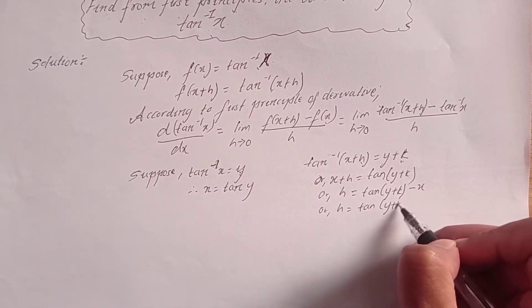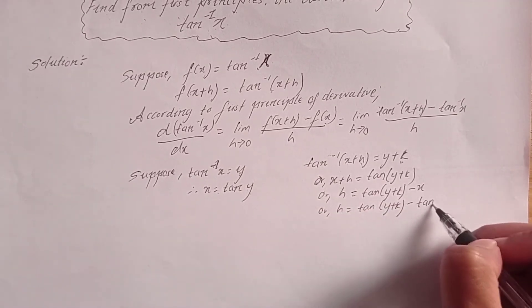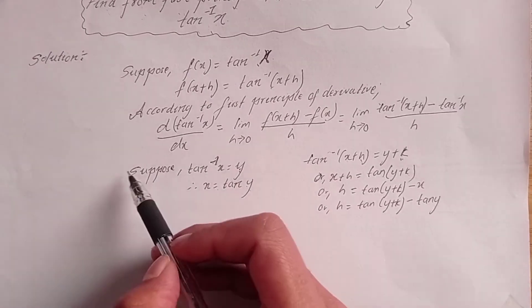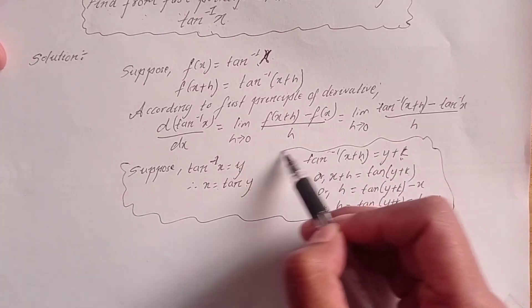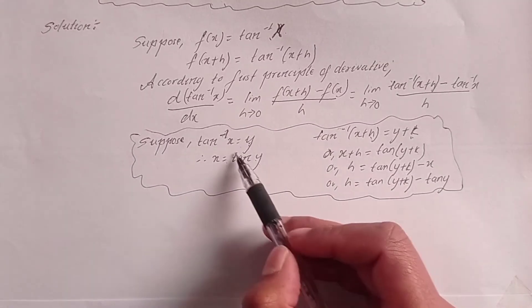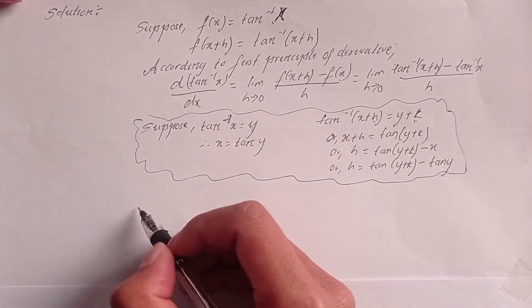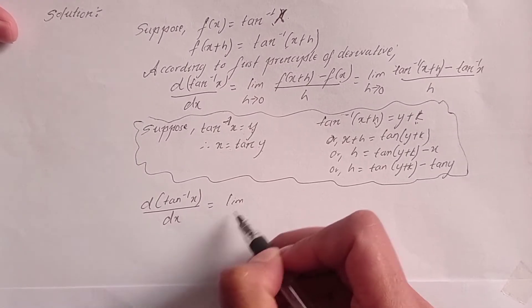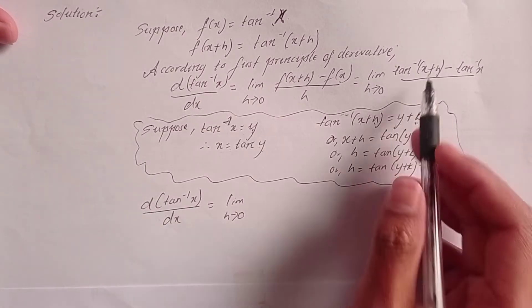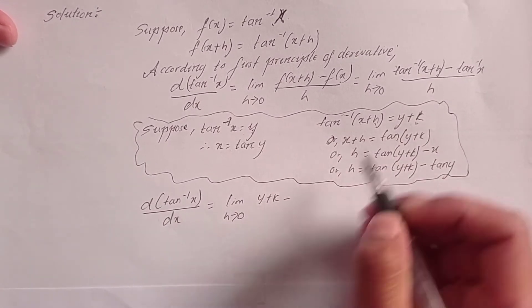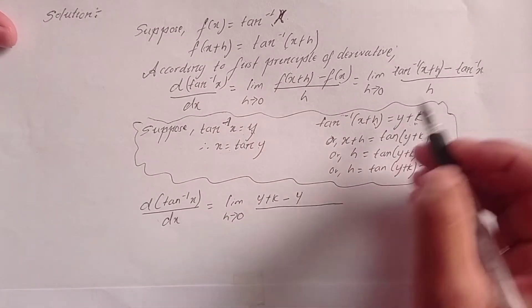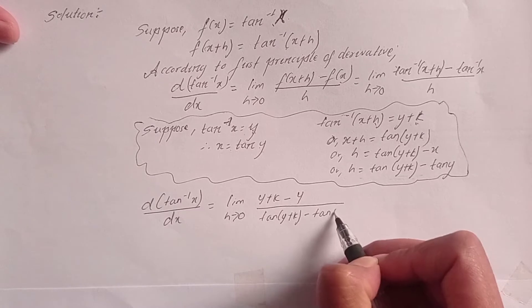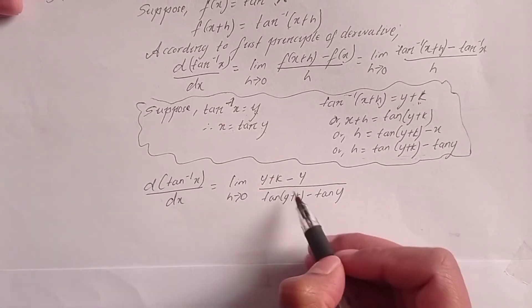So h equals tan(y+k) minus tan y. Now substituting these values in, the derivative of tan inverse x with respect to x equals limit as k tends to 0 of [tan inverse(x+y) minus tan inverse x] divided by y, which becomes [tan(y+k) minus tan y] divided by k.